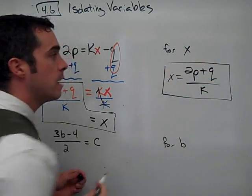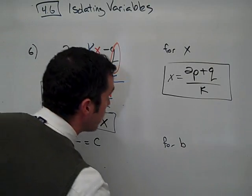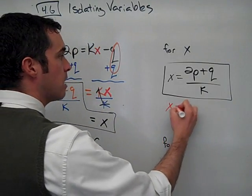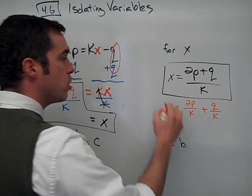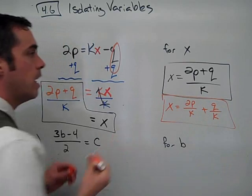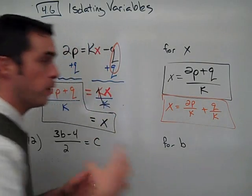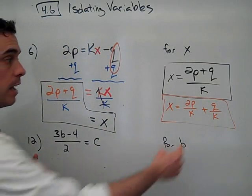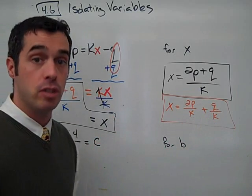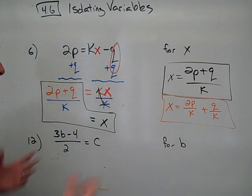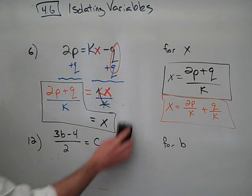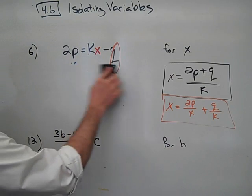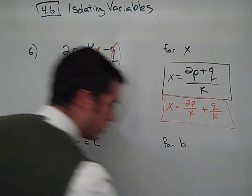Now, as we spoke in class, that is algebraically equivalent to x equals 2p over k plus q over k. So if you were working in your homework and you used a different algebra technique that we discussed in class, you may have gotten this as an answer. That's just fine. That's all I really have to say about that problem.